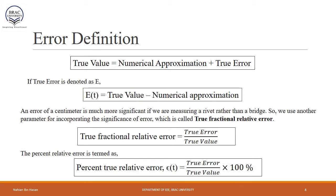Now let's talk about different definitions of errors that frequently appear in numerical methods. Since numerical methods approximate a solution, the numerical approximation will incorporate some error. The true error is defined as the true value minus the numerical approximation. This true error can also be expressed as a relative error — called the true fractional relative error — which is the true error divided by the true value. We can also express this in percent notation, denoted as epsilon of t.